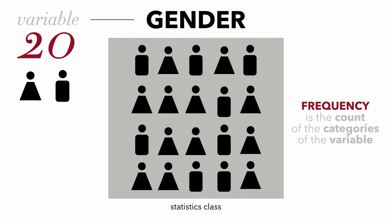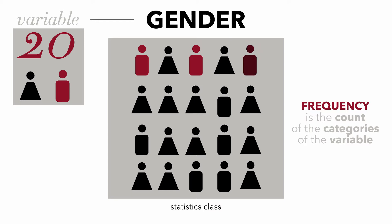So we're going to count them. We'll start with males. We have one, two, three, four, five, six, seven, and eight. So we have eight males.